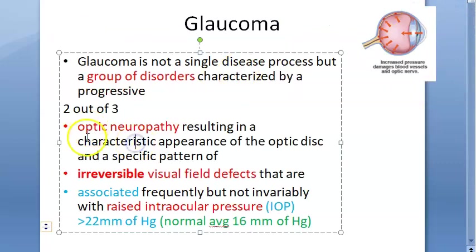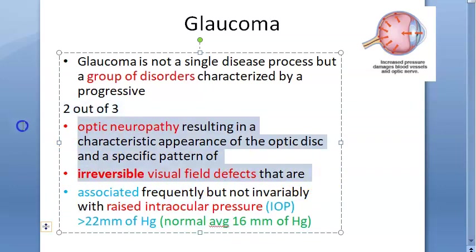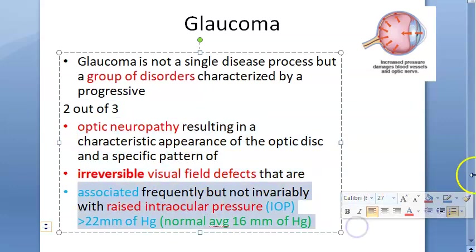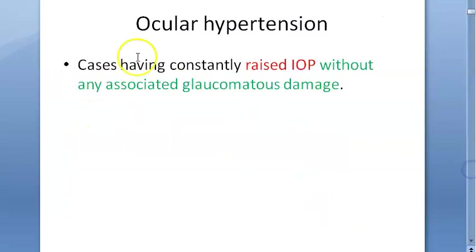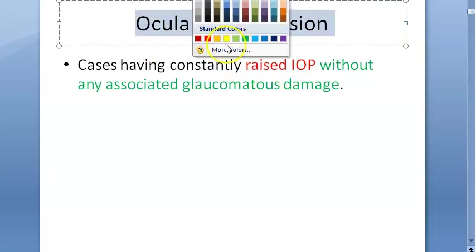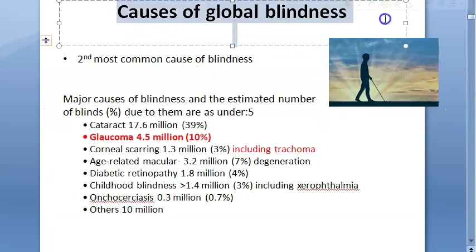If there is only raised intraocular pressure but no other changes, the two-out-of-three criterion is not satisfied, so it is not glaucoma. This is called ocular hypertension — there is no damage yet.